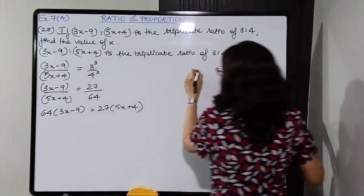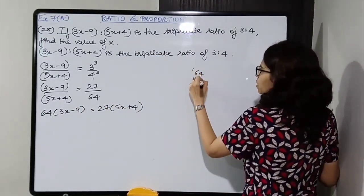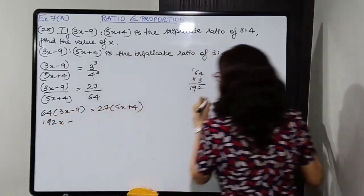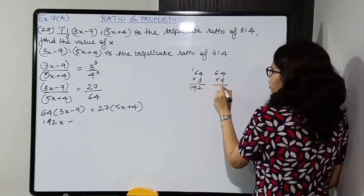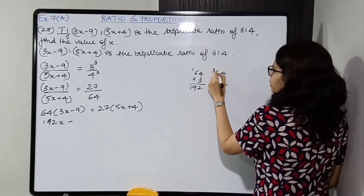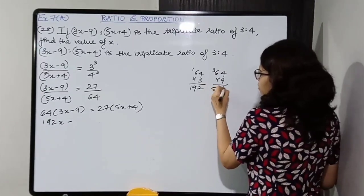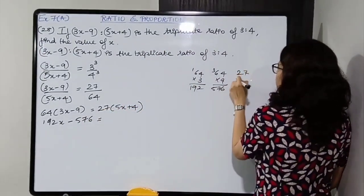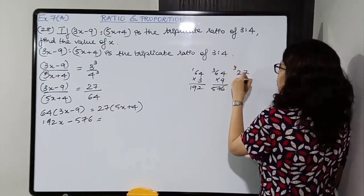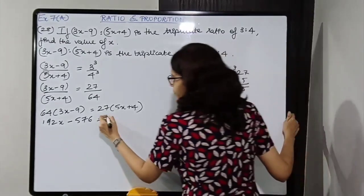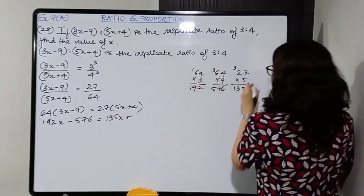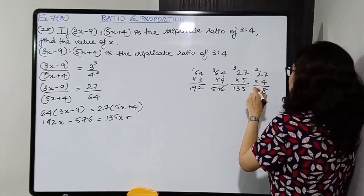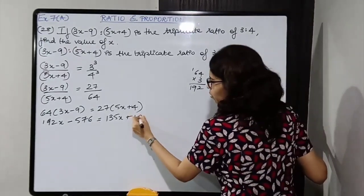64 into 3 is 192x, minus 64 into 9 is 576. 27 into 5 is 135x, plus 27 into 4 is 108. Grouping x terms together and numbers together: 192x minus 135x gives 57x. And 576 plus 108 gives 684.